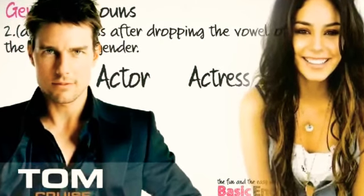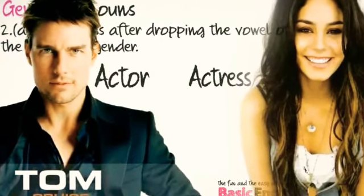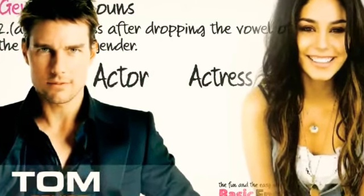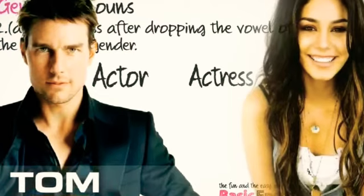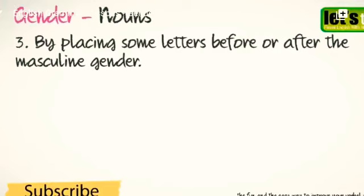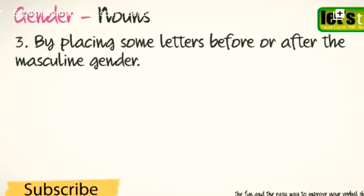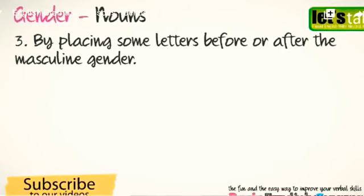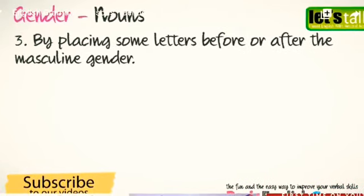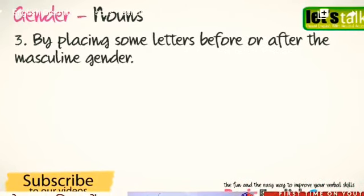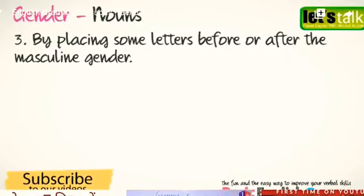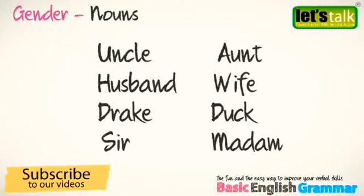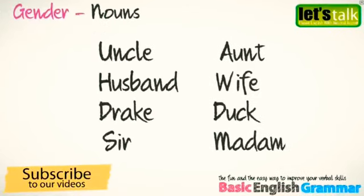The third way is by adding -ess after dropping the vowel of the masculine gender, for example: actor — actress. The fourth is by placing some letters before or after the masculine gender, for example: man — woman.